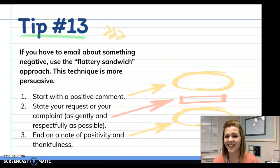Tip number thirteen. If you have to email about something negative, it's important to try to use the flattery sandwich approach. This technique is way more persuasive, and it makes your recipient more likely to do what it is you want them to do. So, to use the flattery sandwich, you would first start with a positive comment. Then you could state your request, or your complaint as gently and respectfully as possible. And then it would be a good idea to end on a note of positivity and thankfulness.